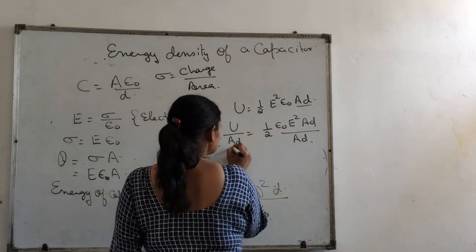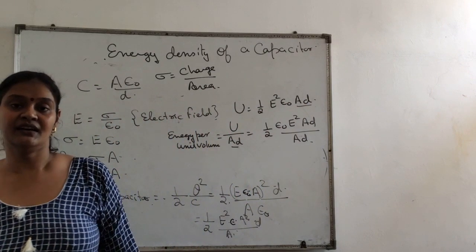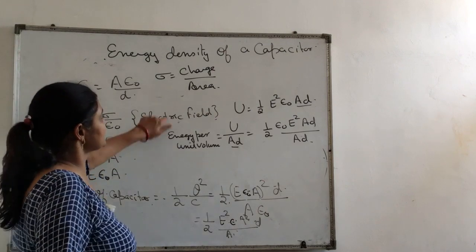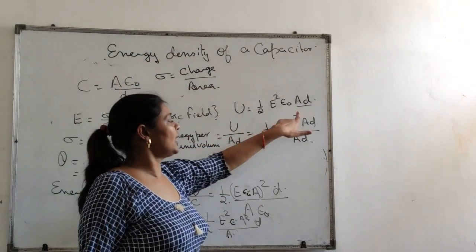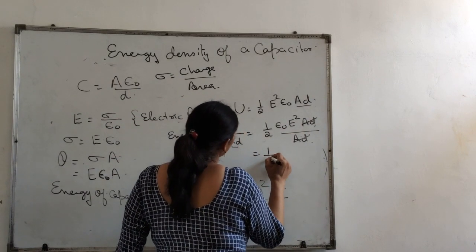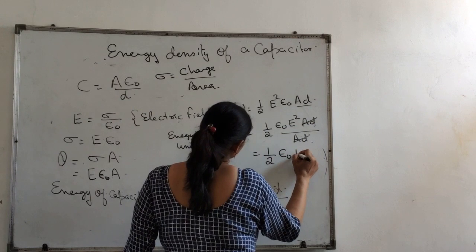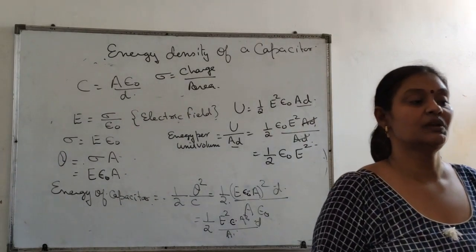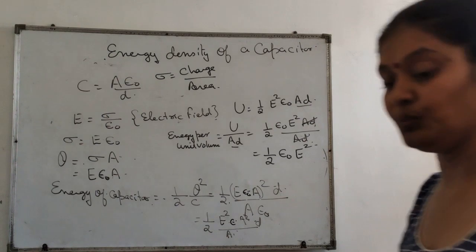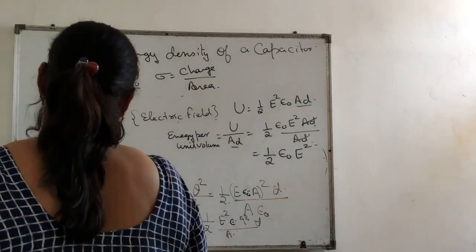What remains is half E square epsilon naught A into D. If you take A into D to denominator, you divide energy by volume, which gives you energy per unit volume or energy density. That is equal to half epsilon naught into E square. That is going to be the energy density of the capacitor.